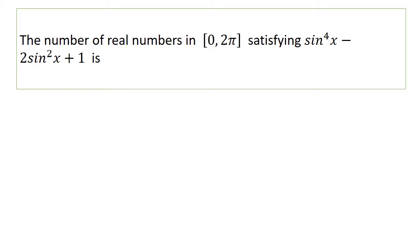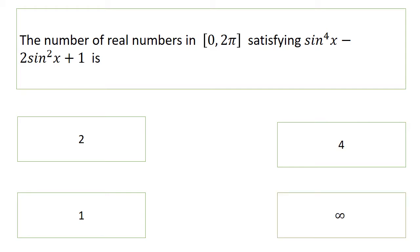Next question: the number of real numbers in the closed interval [0, 2π] satisfying the trigonometric equation sin⁴x - 2sin²x + 1 is: two, four, one, or infinity. Can you guess the answer? Yes, it is two.